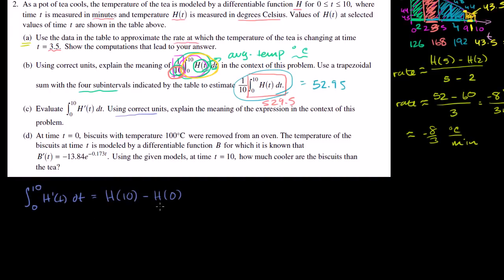When you look at it this way, you see that evaluating the integral gives us the difference in temperature from 0 minutes to 10 minutes. We're taking the temperature at 10 minutes and subtracting the temperature at 0 minutes. So this is really our change in temperature over those 10 minutes.